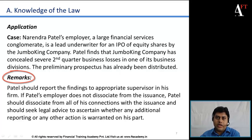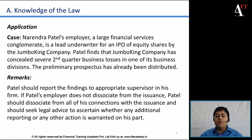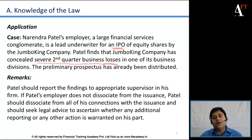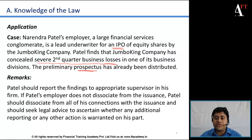Jumbo King company is clearly in violation because it has misrepresented factual information — it has not disclosed second quarter business losses in one of its business divisions. This could have a significant or material impact on the IPO pricing of the shares. Because the prospectus is not including such business losses, it is a misrepresentation to potential investors and clearly a violation.